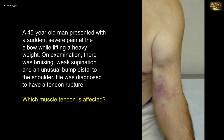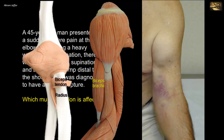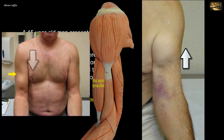A 45-year-old man presented with sudden severe pain at the elbow while lifting a heavy weight. On examination, there was bruising, weak supination, and an unusual bump distal to the shoulder. He was diagnosed to have a tendon rupture. The detached muscle belly is in the anterior compartment of the arm — it is the biceps brachii muscle. Its distal tendon, where it is attached to the radial tuberosity, is torn, causing the muscle to ball up near the shoulder. Sometimes the tendon of the long head of biceps may rupture, in which case the detached muscle belly forms a ball near the center of the distal part of the anterior aspect of the arm. These ruptures result from forceful flexion of the arm against resistance, as occurs in weightlifters.